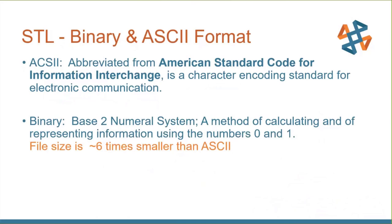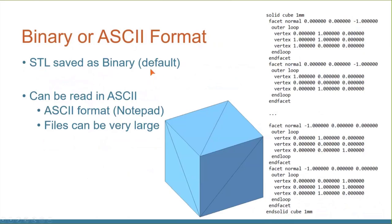When saving your STL file, you can choose ASCII or binary format. ASCII you can actually read in Notepad. Binary is about six times smaller, so save in binary — that's your default. In the ASCII format you can see exactly where every triangle vertex is located in XYZ space and which way the normals are facing, but you might have to be Rain Man to actually edit it. Always use the binary format.